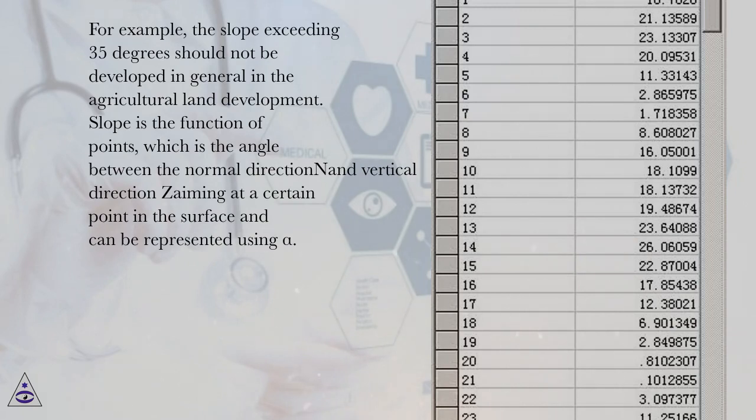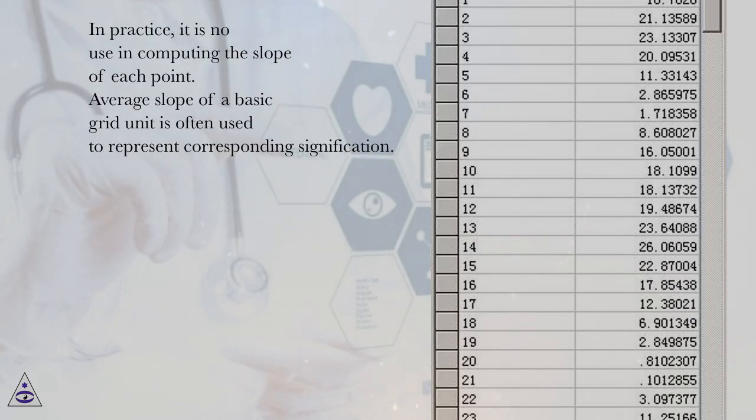Slope is the function of points, which is the angle between the normal direction and non-vertical directions aiming at a certain point in the surface and can be represented using alpha. In practice, it is no use in computing the slope of each point. Average slope of a basic grid unit is often used to represent corresponding signification.